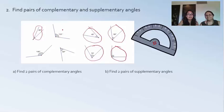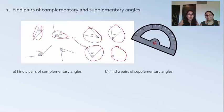For instance, 110 degrees plus 70 degrees gives you a supplementary pair, which adds up to 180. And for extra practice, 140 degrees plus 40 degrees also gives you 180.